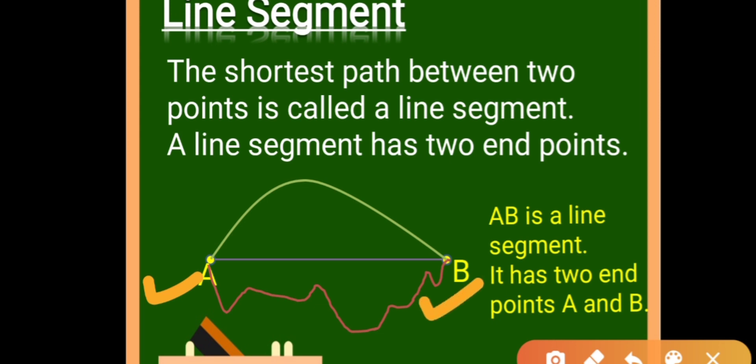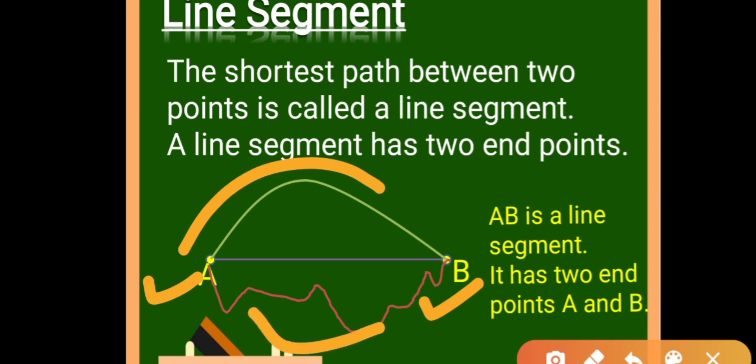There are two points — point A and point B. We can go from point A to point B in many ways. I have drawn three ways over here: this one, this one, and this one.